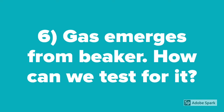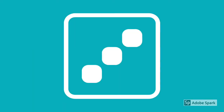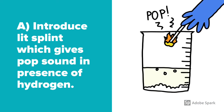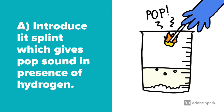Gas emerges from the beaker. How can we test for it? He can introduce a lit splint, which gives a pop sound in the presence of hydrogen.